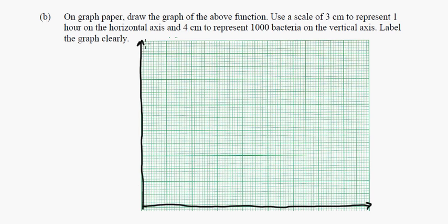So, part B says on graph paper, draw the graph of the function above. Use a scale of 3 centimeters to represent 1 hour on the horizontal axis. So that's 3 boxes. 5 by 5 boxes are 1 centimeter. And 4 centimeters to represent 1,000 on the vertical axis. Label the graph clearly. Well, I'm going to do this real quick. You don't have to watch me make a graph. So, I'll be back in one second.